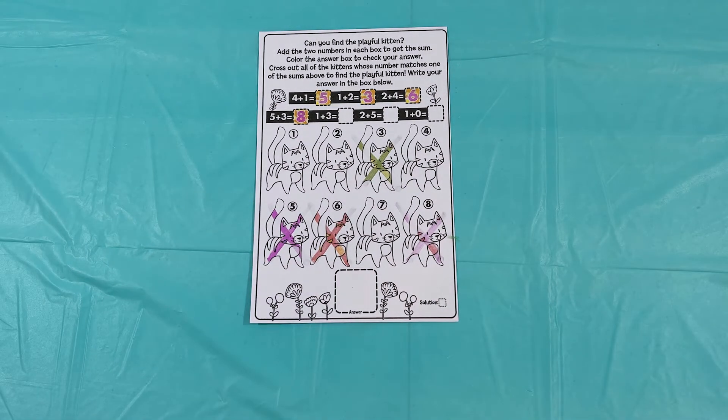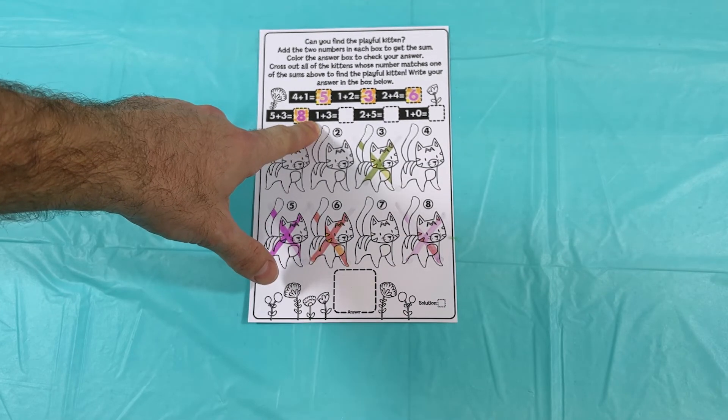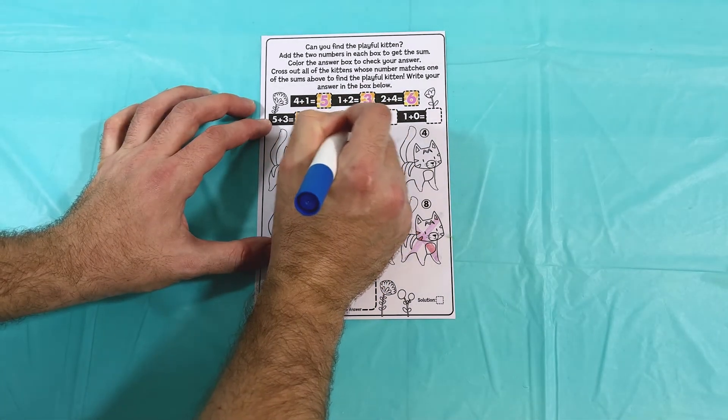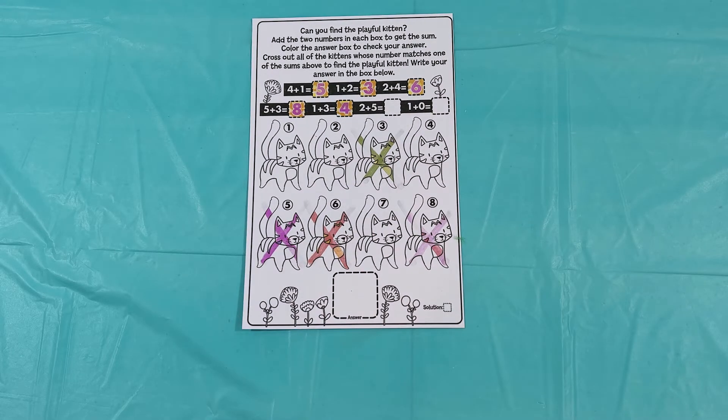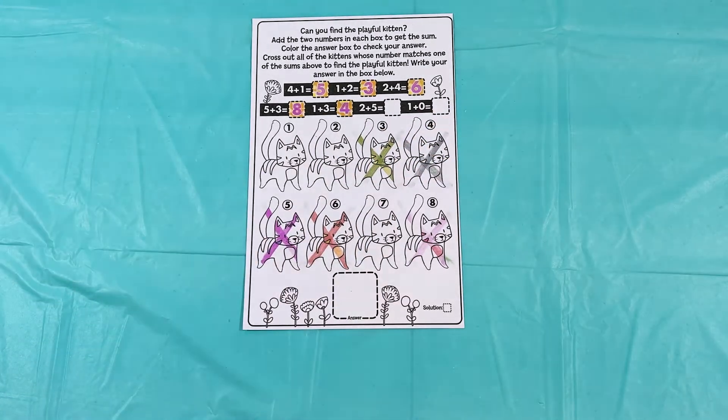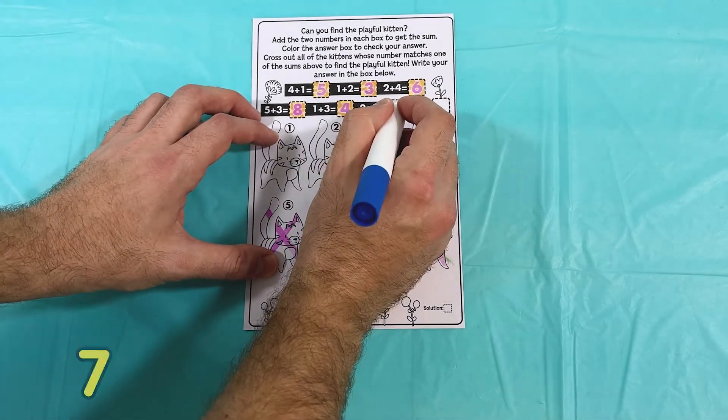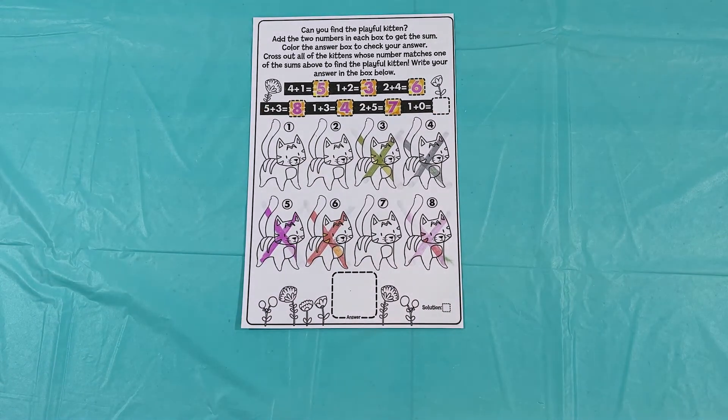Next is one plus three. Great job, it's four. Okay. So let's cross out cat number four. All right. Next we have two plus five. That's right, it's seven. All right. Now we get to cross out cat number seven. We're getting closer.